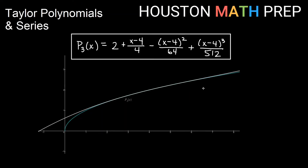We've plotted our third degree Taylor polynomial on top of the graph of square root of x, and you can see it's a nice approximation around x equals 4. As we get down toward the end of the function, it's not a very close approximation. As we get out past maybe 7 or 8, it looks like we start to veer off a bit, but right around 4 it's a very nice approximation.